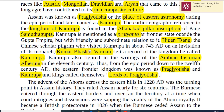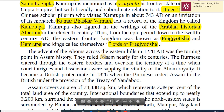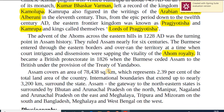The advent of the Ahoms across the eastern hills in 1228 AD was a turning point in Assam's history — they ruled for nearly six centuries. The Burmese later invaded, and then ceded Assam to the British by the Treaty of Yandabu. This treaty is very important in Assam's history.